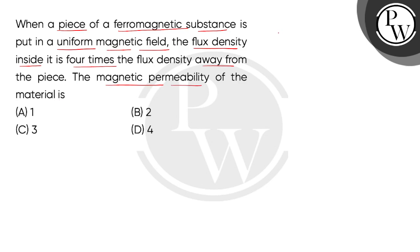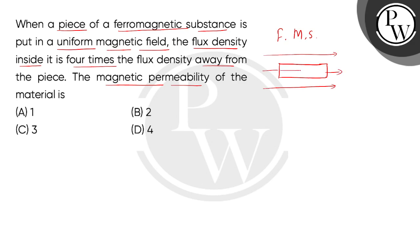Given in our question, we have a ferromagnetic substance — let's show it as a bar piece. When we keep this substance in a uniform magnetic field, we consider the flux density inside, which we call phi-in, and the flux density outside, which is away from this position.